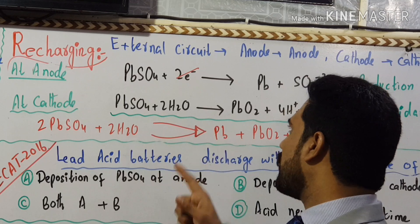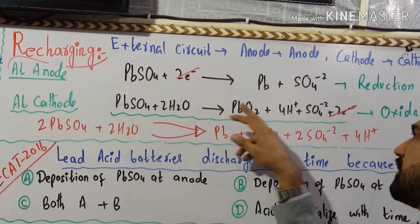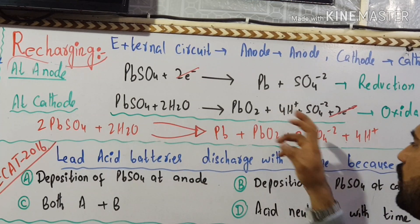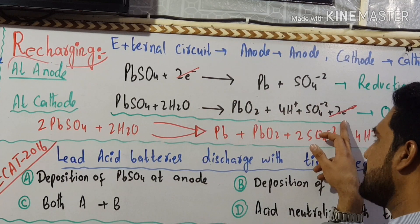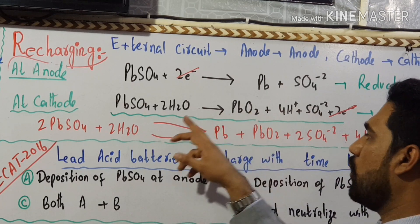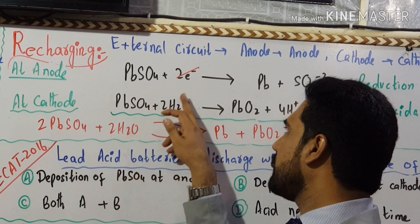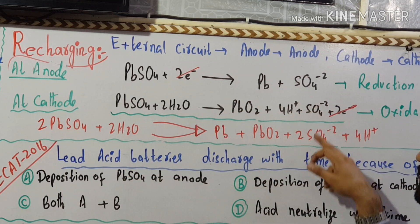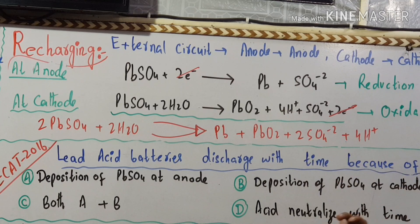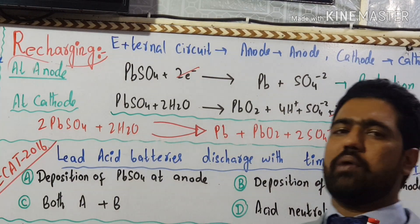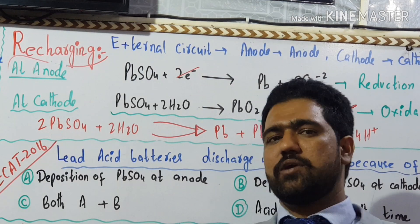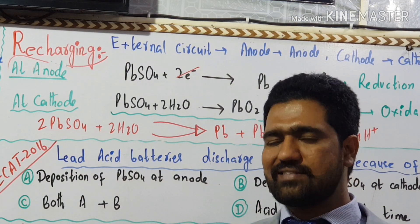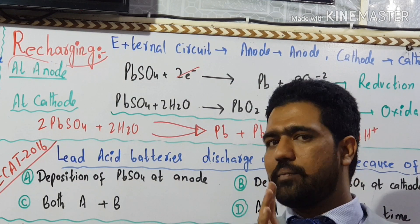During recharging, water is split: hydrogen and sulfate ions along with oxygen are produced, restoring the sulfuric acid concentration. This means the density of sulfuric acid returns to 1.25 gram per cm³ and the solution becomes approximately 30% again.